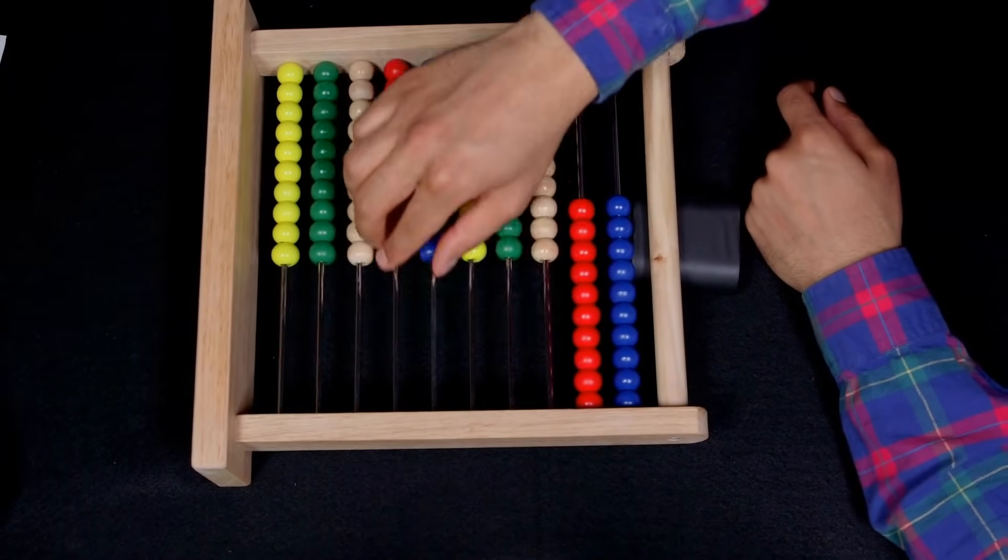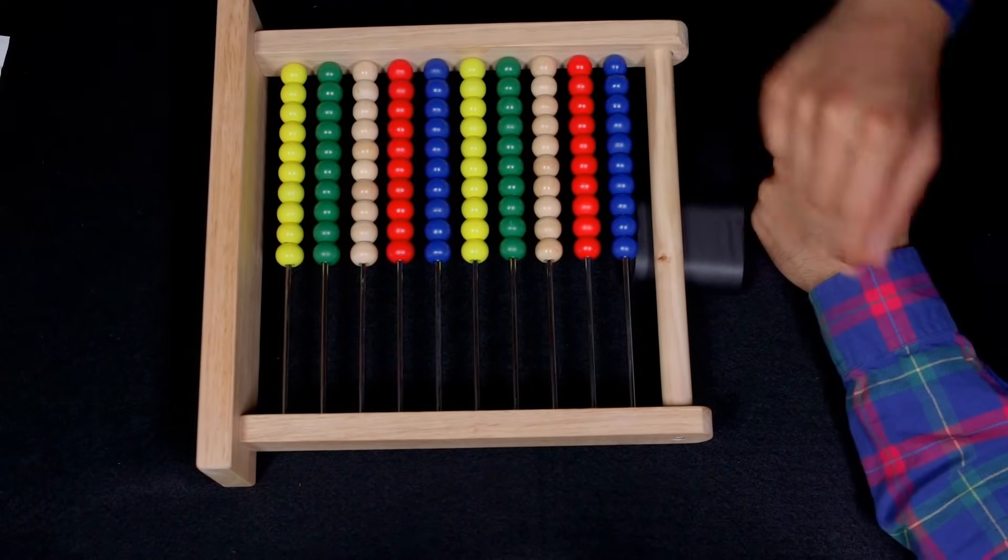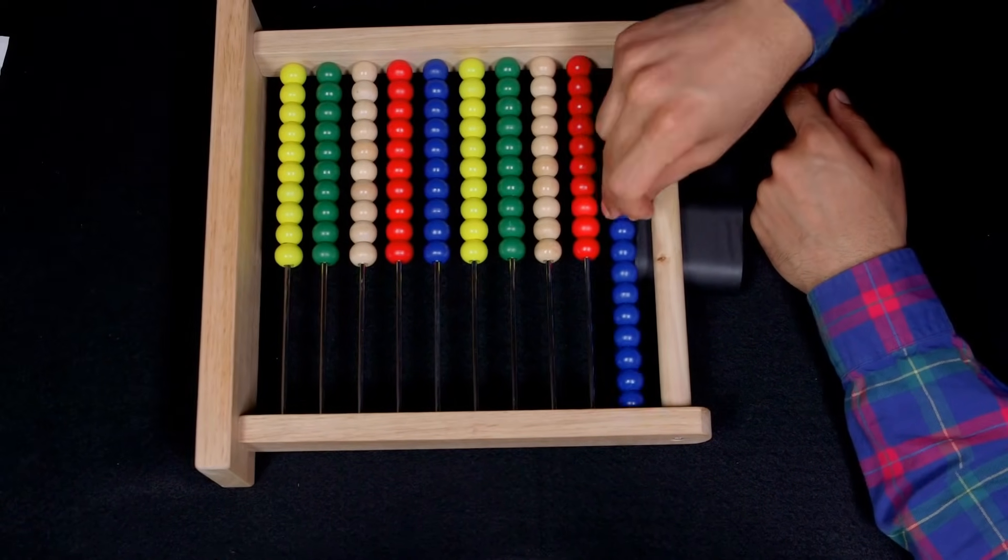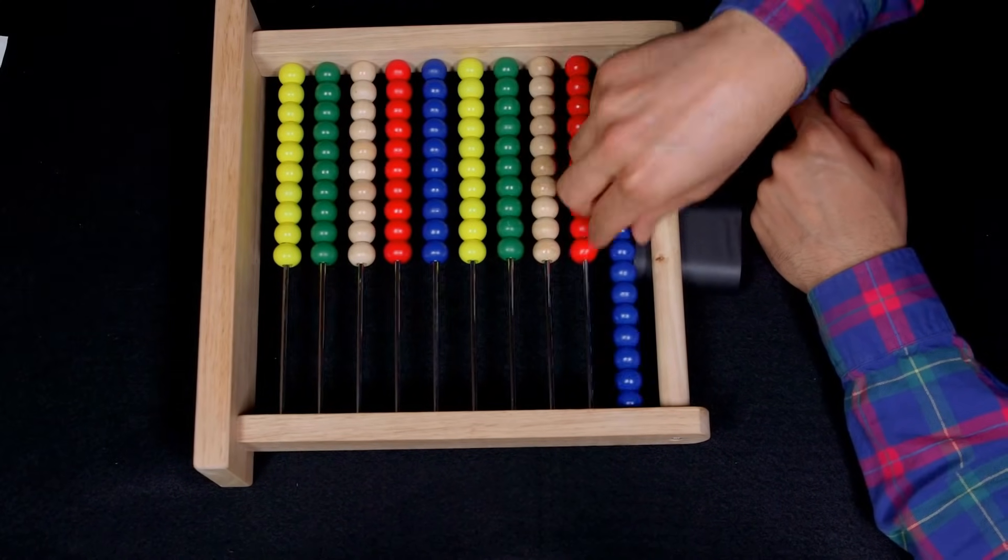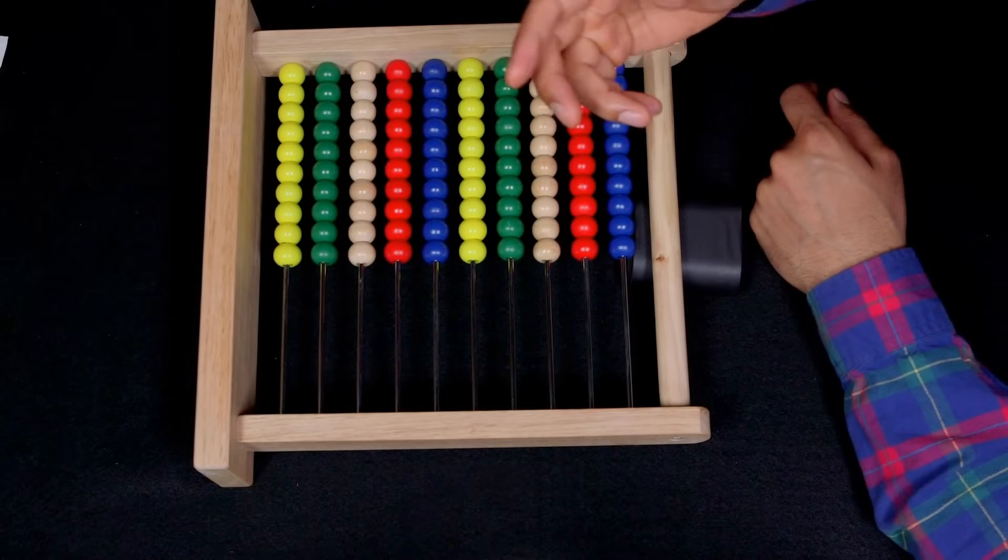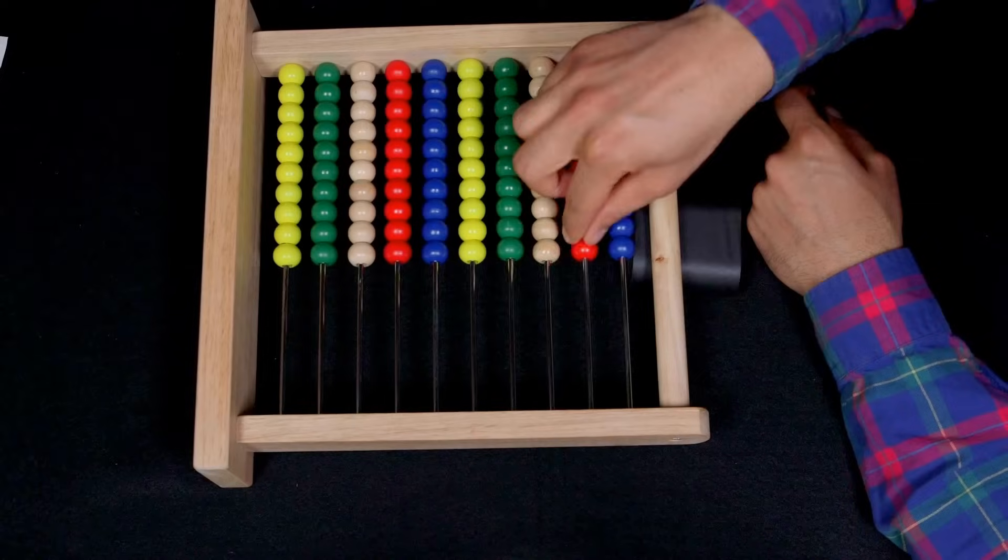So this is 10 right over here, but what if we had one of these red beads represent 10 of these blue beads in this first column? So then you could go, this would be 10, or you could say that is 10.